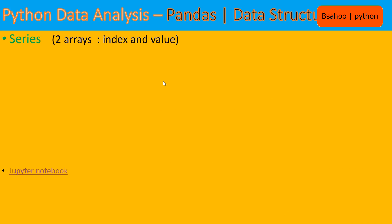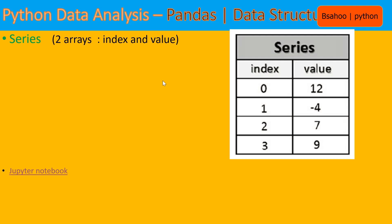Let's go to the pandas data structures. The first one is called Series. Series is pretty similar to NumPy, which we discussed in the previous video. NumPy is basically an array. In a Series, you have two arrays tied together: one is called the index and the other is called the value. The first column is the index, starting from the default index 0, 1, 2, 3, and the right-hand side has the values like 12, -4, 7.